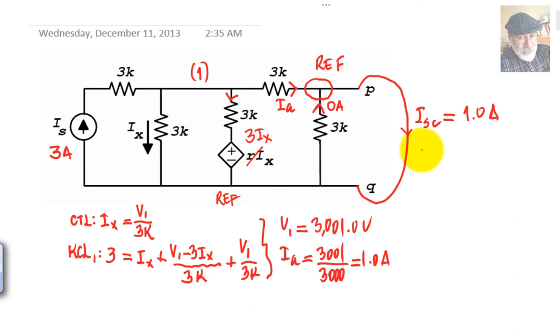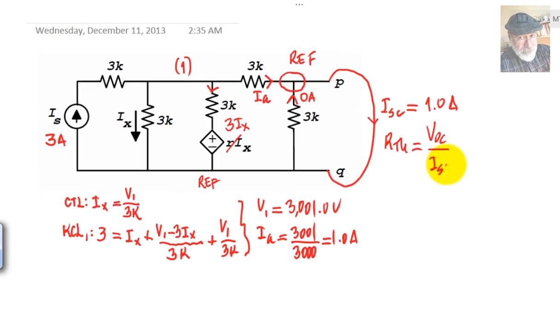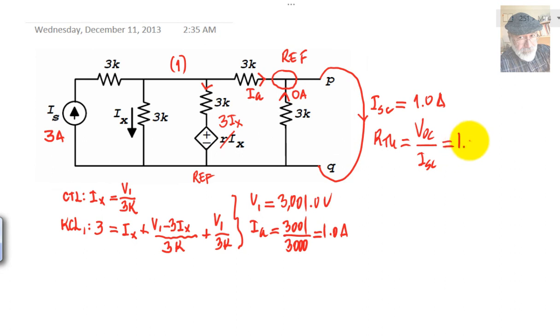To find RTH, and as usual in the classic method, we just divide the open circuit voltage, that was 1.8 kilos, by the short circuit current. That gives us 1.8 kilo ohms.